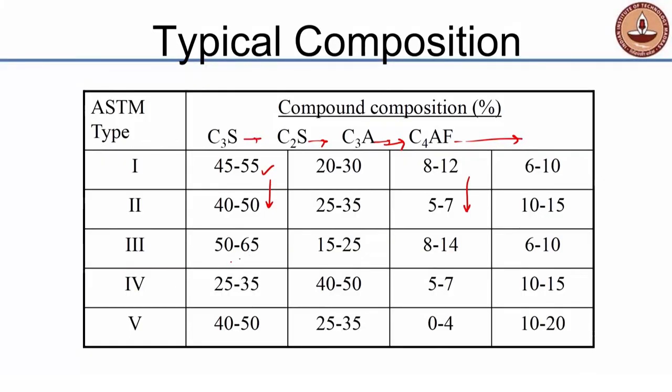Type 3 cement has a higher C3S content because we want higher early strength, and it will also have a higher fineness. To make cement more reactive, all we need to do is grind it finer — when you grind it finer, it becomes more reactive. But you also increase the heat of hydration, which increases the possibility for thermal cracking in your system.